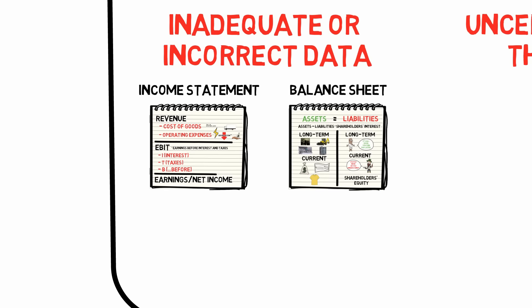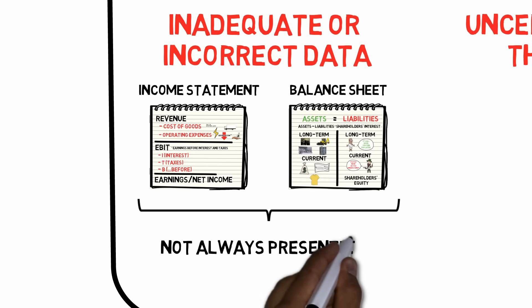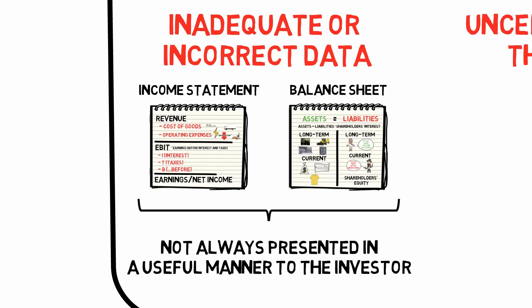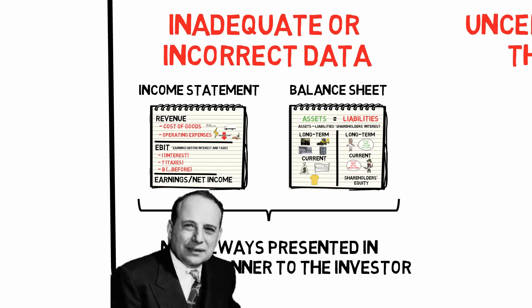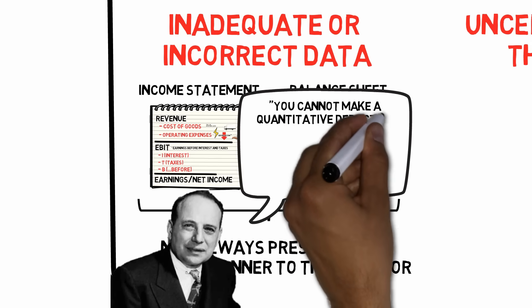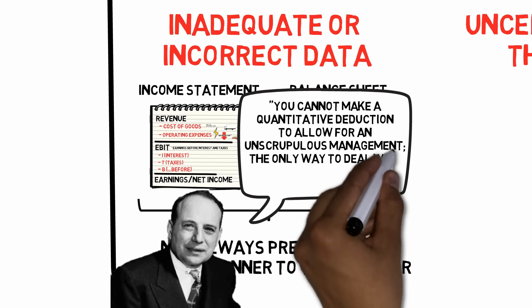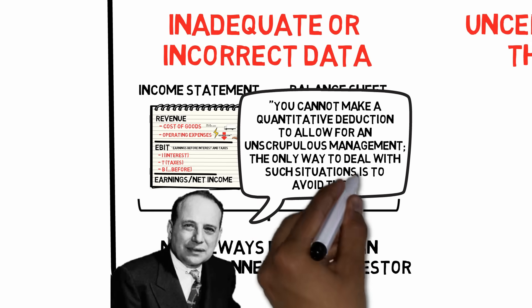For now, it will be sufficient to say that data in company reports may not always present the situation in a useful manner to the investor. In general, when you suspect that you've encountered a company that pursues questionable accounting principles, avoid all securities of that company. You cannot make a quantitative deduction to allow for an unscrupulous management. The only way to deal with such situations is to avoid them.